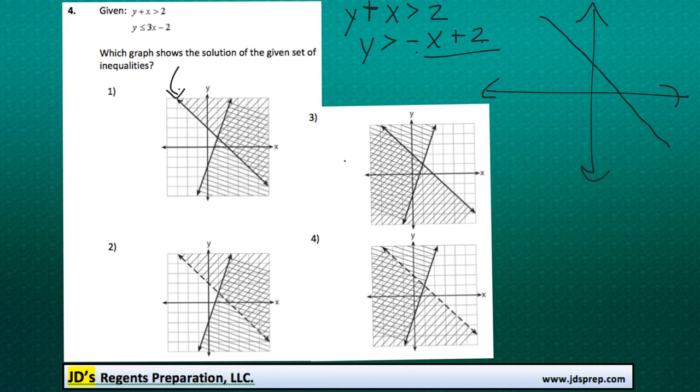Now, y has to be greater than, so actually I guess that means it would be a dotted line, right? Let's try that again. Okay, so it should be a dotted line because it doesn't include that line. And then we're looking for everything greater than that, so everything up here.